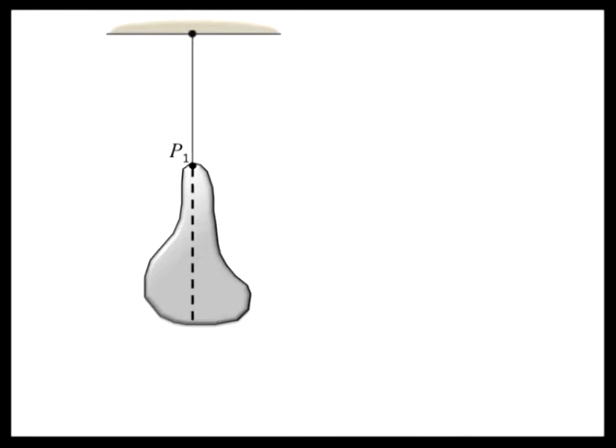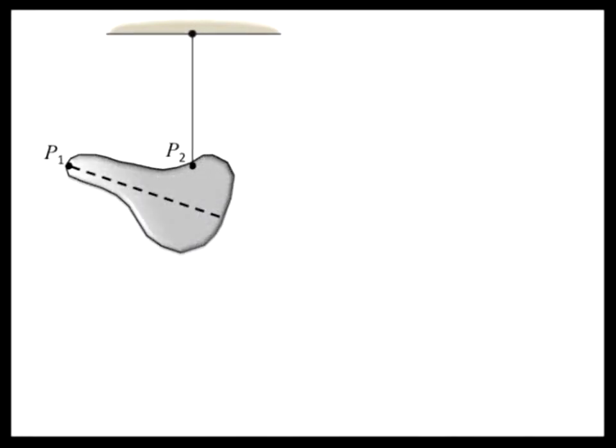To determine the location of the center of gravity on this line, we simply hang the object from another arbitrary point P2. The object will hang in equilibrium again, and the center of gravity must again be on a line below the point of suspension. We draw another dashed line, and the point where the two dashed lines cross must correspond to the location of the center of gravity.